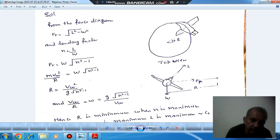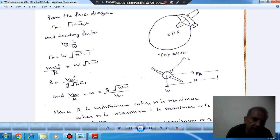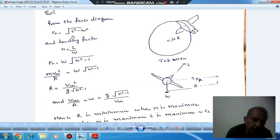We can see that L is the resultant of FR and W, or FR equals square root of L squared minus W squared. Taking N as the load factor, N equals L by W, and taking W as common out of the root, we get FR equals W times square root of N squared minus 1.